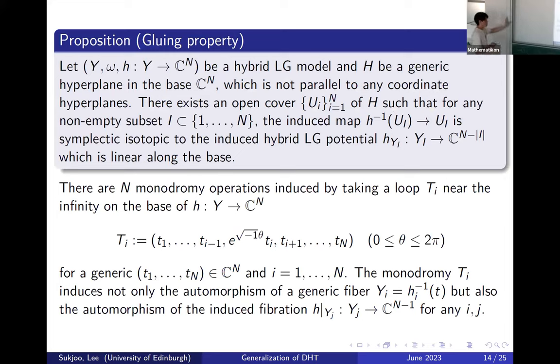The first proposition says that the anti-diagonal hyperplane is basically the union of all the generic fibers. This comes from the mirror symmetry expectation. You also consider a monodromy operation, which is defined by taking a loop along one of the coordinate hyperplanes near infinity. The loop operation is given by this formula.